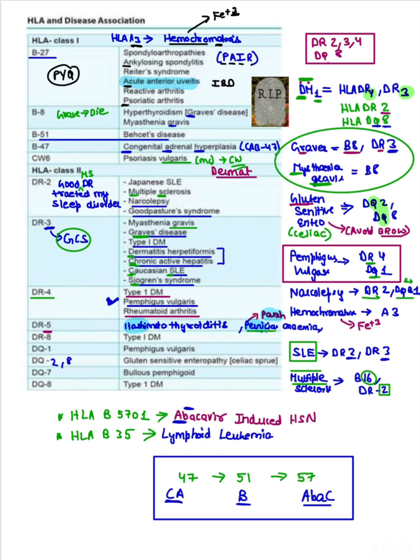Now coming to B8. First of all, the diseases are Graves disease and myasthenia gravis. Both have the term 'grave' coming, which means someone has died. When someone has died, there's a grave. If you make one more cross, that looks like an 8. HLA-B8.